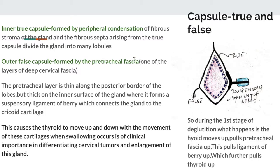The neck is surrounded by the deep cervical fascia like a collar, which sends extensions inward to enclose different compartments. The pre-tracheal fascia encloses the larynx and trachea, and also forms the false capsule for the thyroid gland.